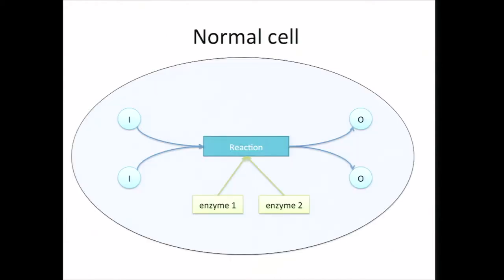In order to give you an understanding of what we call a vulnerability in the context of this project, I first have to give you a little bit of background information about the biological processes. In this really simple cartoon, I'm showing you a normal cell — this is really oversimplified. You can see that within this cell, there's a metabolic reaction happening, represented by this rectangular box, and there are inputs and outputs to this reaction.